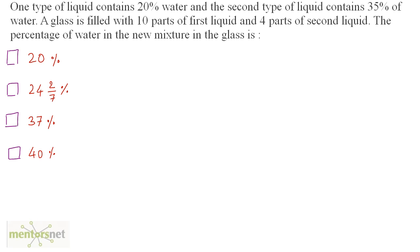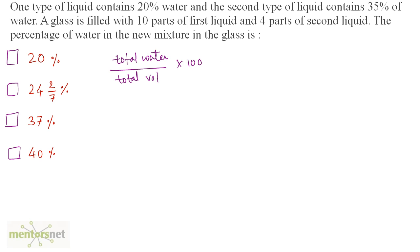One type of liquid contains 20% water and the second type of liquid contains 35% water. A glass is filled with 10 parts of the first liquid and 4 parts of the second liquid. The percentage of water in the new mixture in the glass is what? To calculate the percentage of water, we need to find the total water upon the total volume of the mixture times 100. Of the first liquid, 20% is water, and of the second liquid, 35% is water.